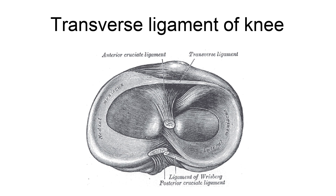The transverse anterior meniscal ligament is a ligament in the knee joint that connects the anterior convex margin of the lateral meniscus to the anterior end of the medial meniscus. It is divided into several strips in 10% of subjects, and its thickness varies considerably in different subjects.